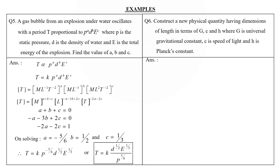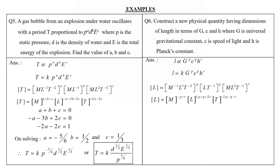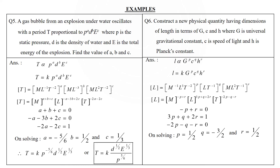Sixth example: construct a physical quantity having dimensions of length using g, c (speed of light), and h (Planck's constant). Write L ∝ gᵖ · cᵍ · hʳ. After substituting dimensions and equating, we get p = 1/2, q = −3/2, r = 1/2. So L = k · g^(1/2) · c^(−3/2) · h^(1/2), which can be rearranged accordingly.